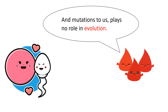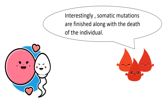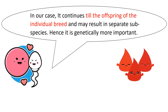Mutations to somatic cells play no role in evolution. But germ cell mutation is the basis of evolution. Interestingly, somatic mutations are finished along with the death of the individual. In our case, it continues till the offspring of the individual breed, and may result in separate subspecies.